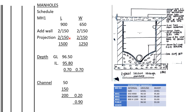We also add the projection — 150 times two on the length and 150 times two on the width. When we add all of this, we get a total length of 1500 and a total width of 1250.